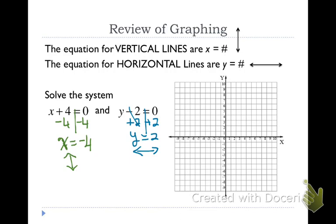x equals negative 4. So I'm going to go over to negative 4 on my x axis, put a big point, and I know it's a vertical line, so I'm going to draw a line right there. And then y equals 2 is a horizontal line. So I'm going to go up to 2 on my y axis, and I'm going to put a point, and I know that this is a horizontal line. So I'm going to draw a horizontal line right there.